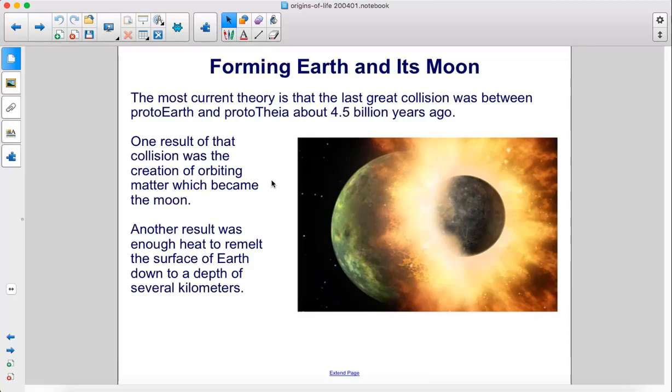The most current theory is that the last great collision was between Proto-Earth and Proto-Theia, about 4.5 billion years ago. One result of that collision was the creation of orbiting matter, which became the Moon.